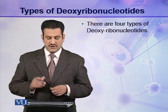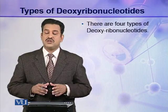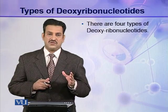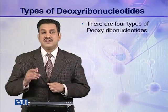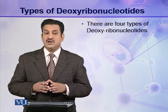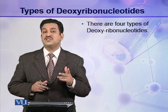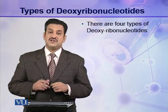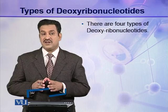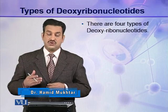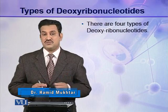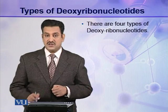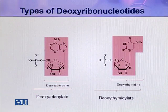Let us come to the types of deoxyribonucleotides. As you have seen in a nucleotide molecule, there are three components: phosphoric acid, pentose sugar, and a nitrogenous base. Two components are the same in all deoxyribonucleotides — phosphoric acid and pentose sugar. The third component, the nitrogenous base, varies. So on the basis of the type of nitrogenous base, there are four types of deoxyribonucleotides present in a DNA molecule.